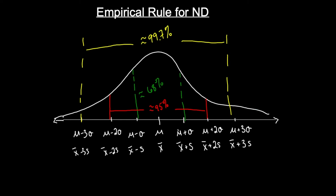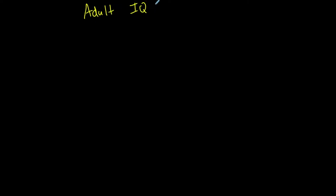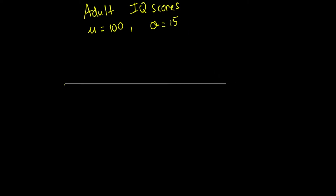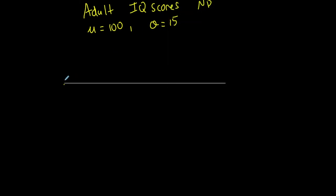Let's use a typical example: adult IQ scores. Adult IQ scores have a population mean of 100 and a standard deviation of 15. Adult IQ scores are normally distributed, so let me draw the bell-shaped curve for this situation.